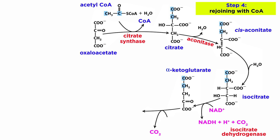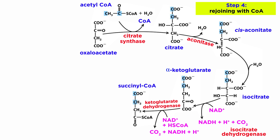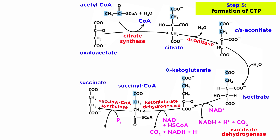Next, another CO2 is lost and further oxidation by NAD+ takes place, with the help of ketoglutarate dehydrogenase. The resulting molecule will join with coenzyme A once again to form succinyl-CoA. CoA is then displaced by a phosphate group to form succinate, which is catalyzed by succinyl-CoA synthetase. This will make one molecule of guanosine triphosphate, or GTP, in the process, which can be used to make one ATP.